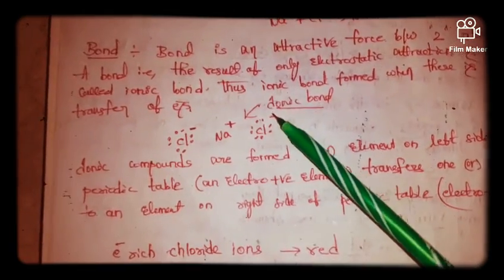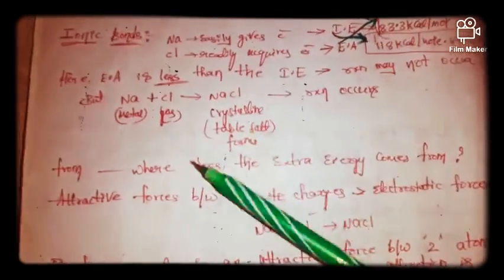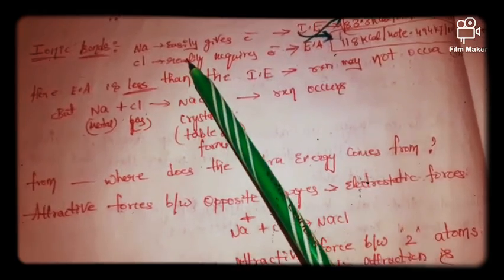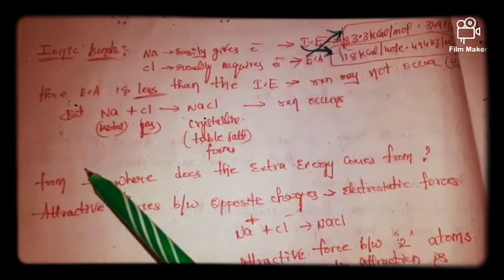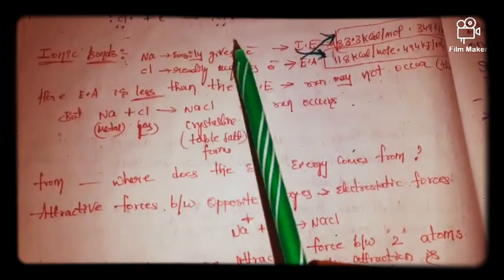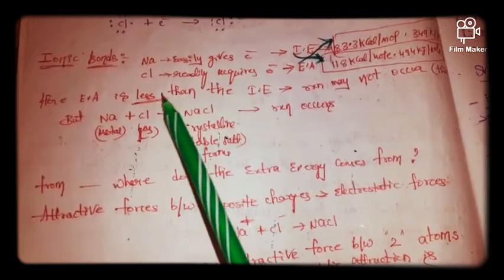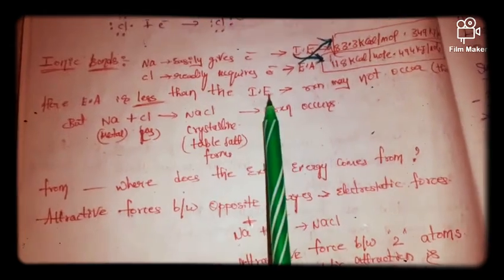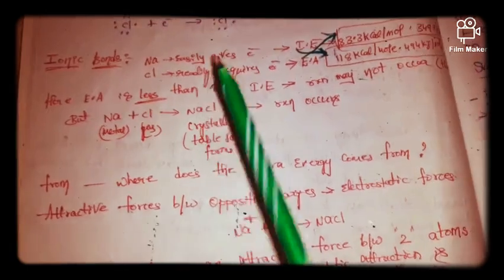Let us see ionic bonds in more detail using the sodium chloride example. Elements on the left side of the periodic table easily give electrons. Sodium is a group one element, so it easily gives electrons. Chlorine is a p-block element, which means it readily acquires or accepts electrons.